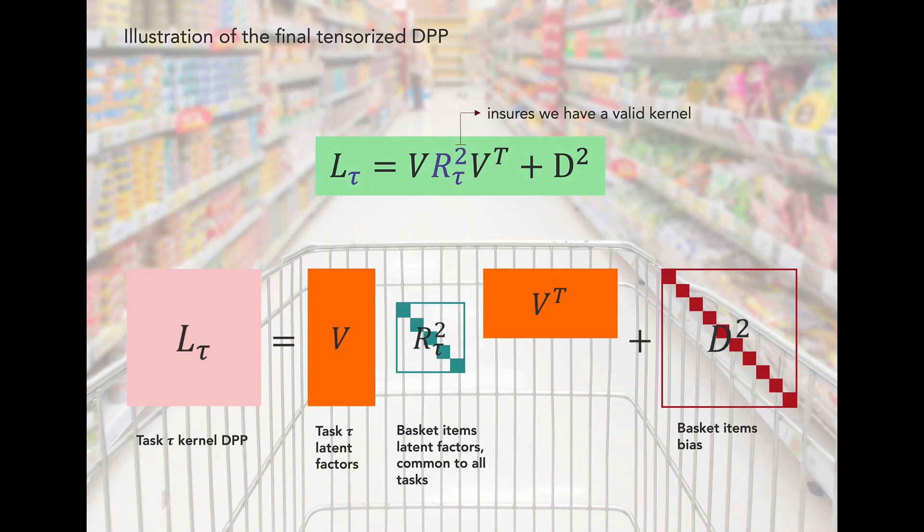Here we see an illustration of our final tensorized DPP model. RT is a diagonal matrix composed of the latent factors for each candidate target item for completing a basket. We use a diagonal matrix to balance the degrees of freedom between target items and items already in the basket.